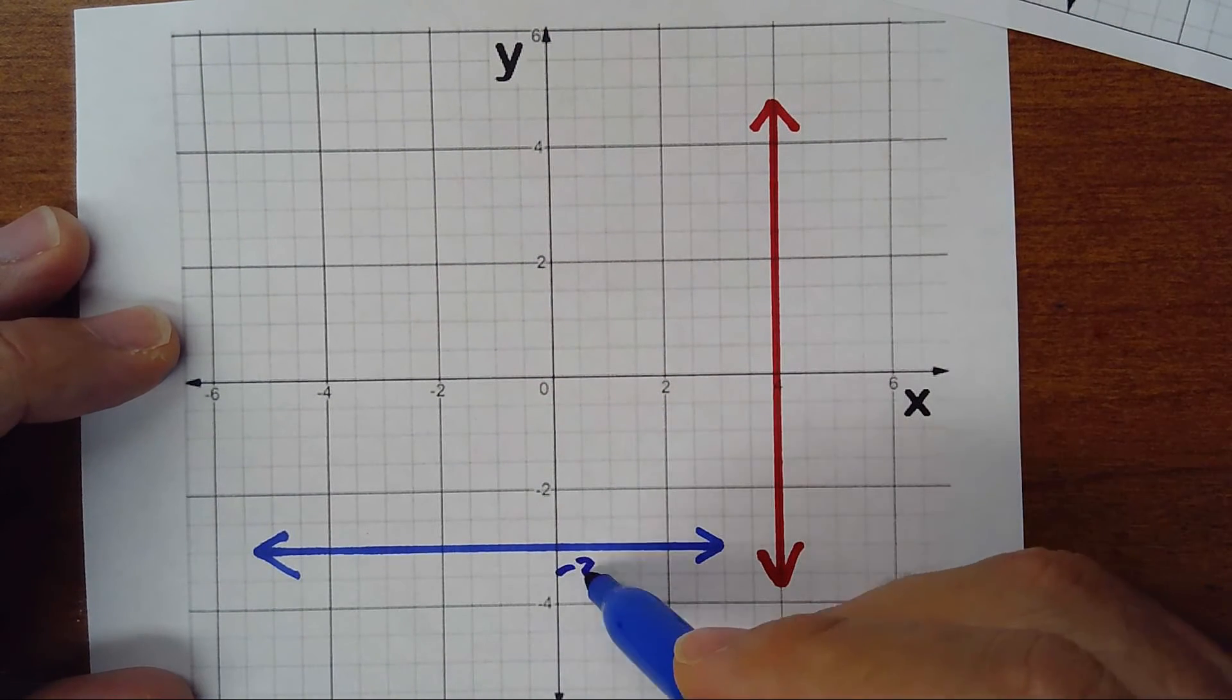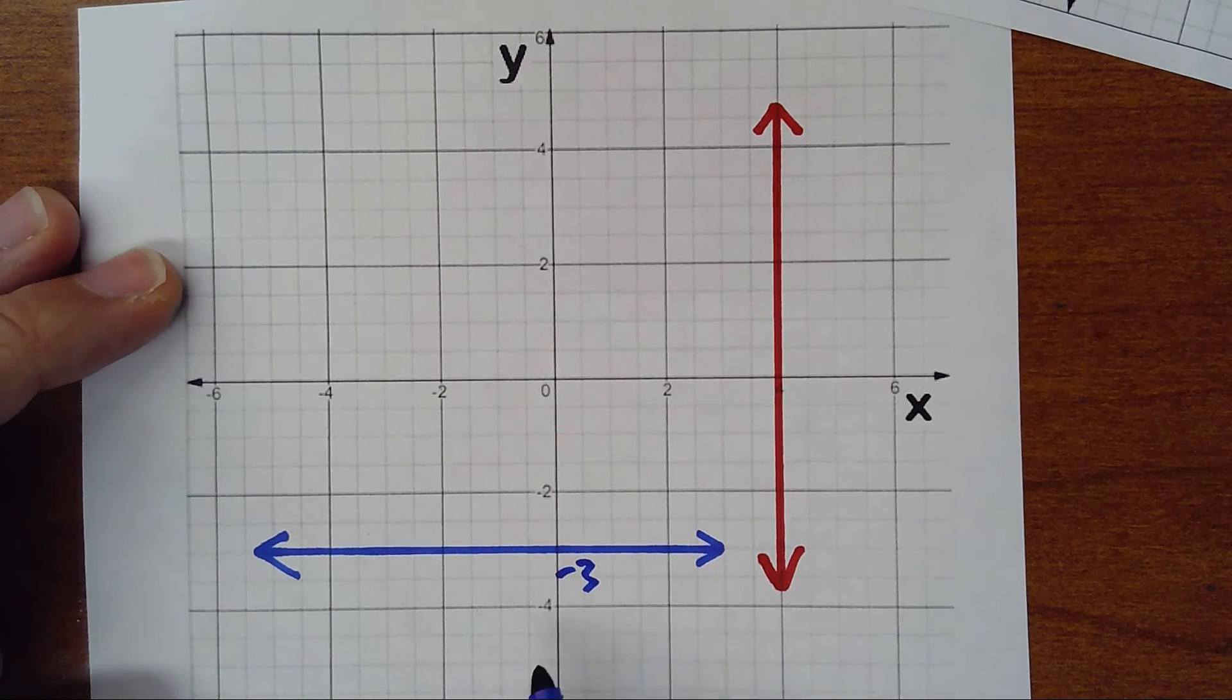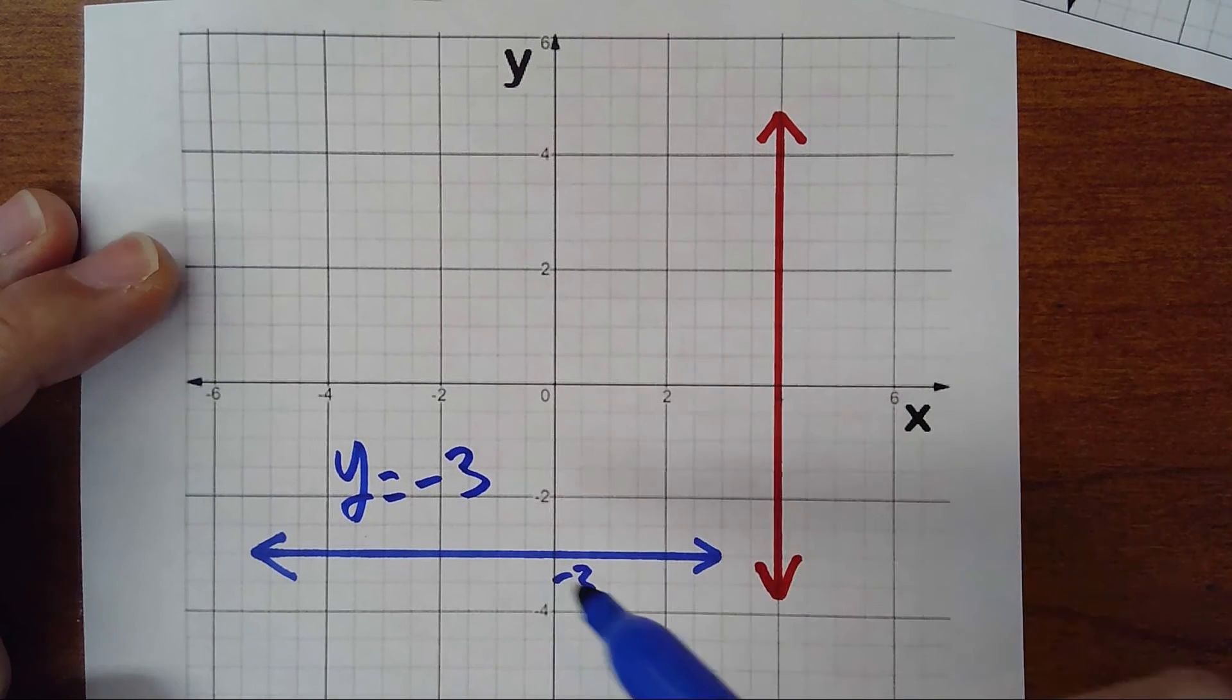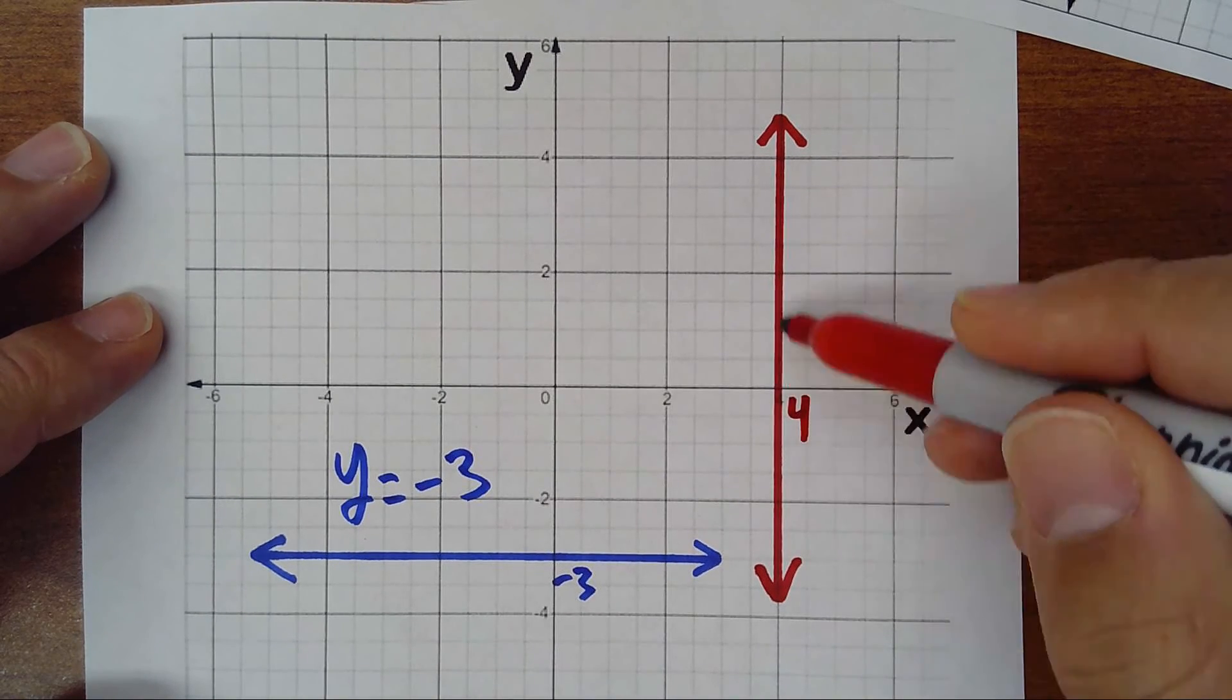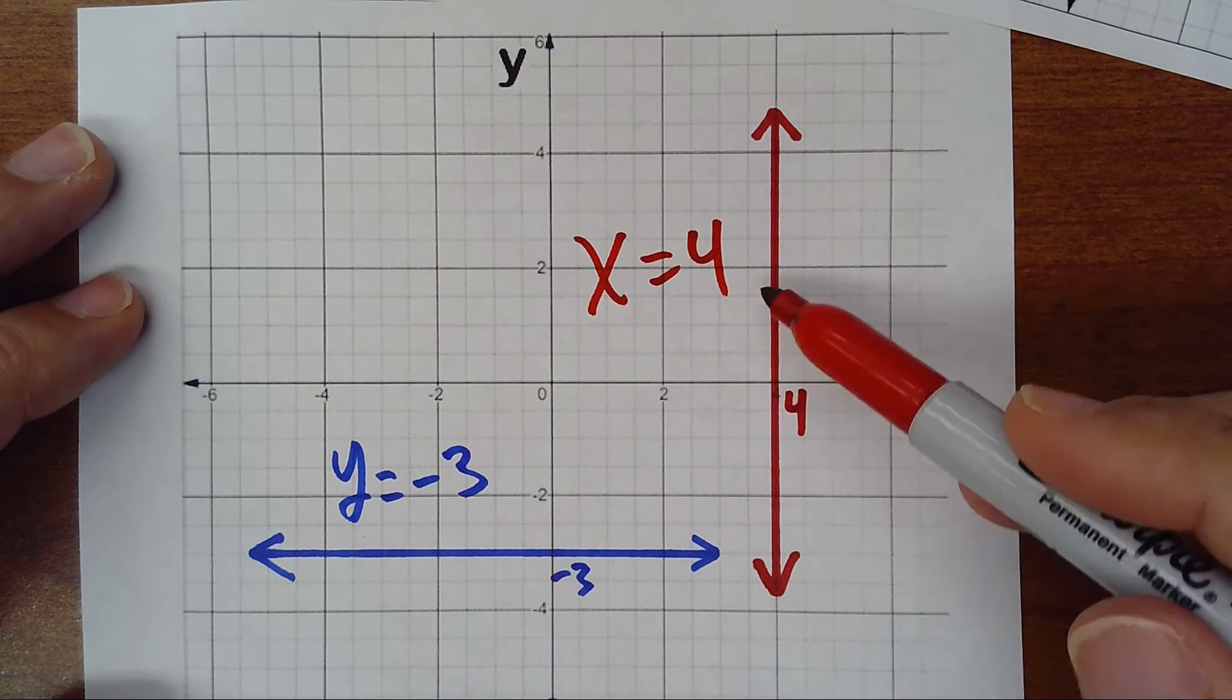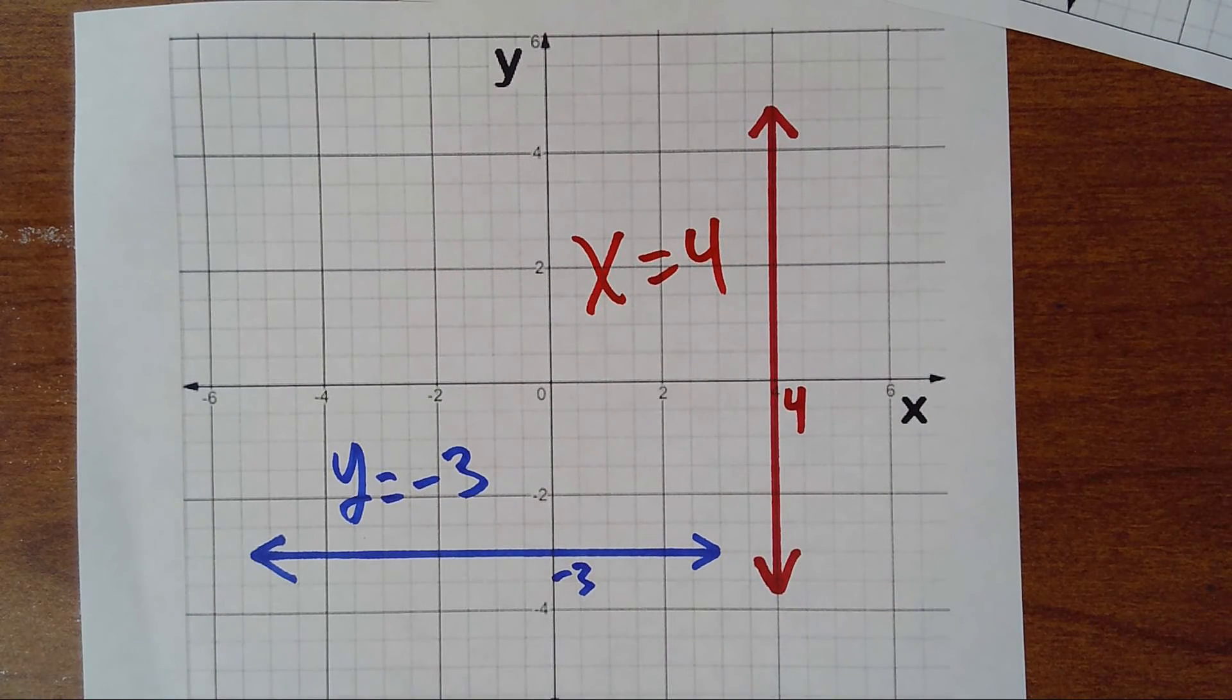This is -3. When the line is horizontal, it's y equals the number, so this one is y equals -3. When the line is vertical, the slope is undefined. This is over the 4, so this one will be x equals 4.